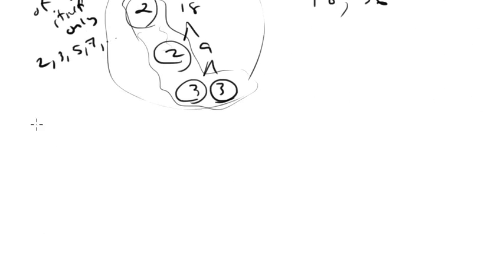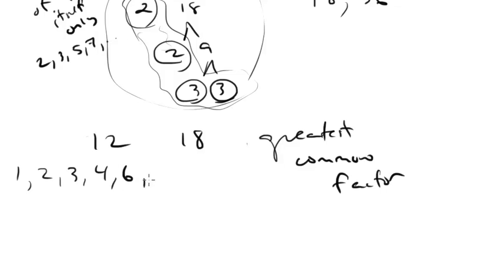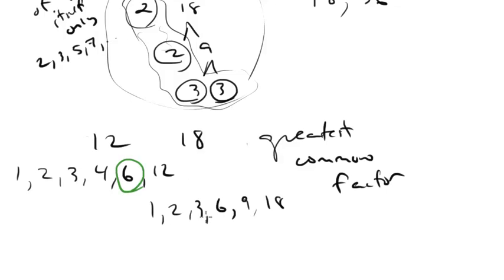One other thing: what if you had two numbers like 12 and 18, and I asked you for the greatest common factor? That means what is the greatest number that these two have in common as a factor? So for 12: 1, 2, 3, 4, 6, and 12. For 18: 1, 2, 3, 6, 9, and 18. The greatest common factor would be 6 — that's the greatest factor they share in common. The GCF of 12 and 18 is 6, and that's pretty much all there is to know about factors.